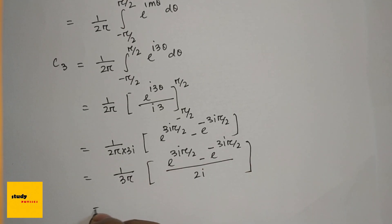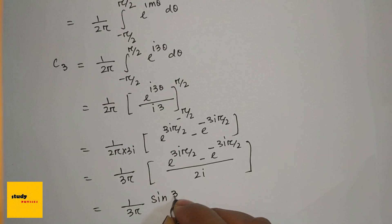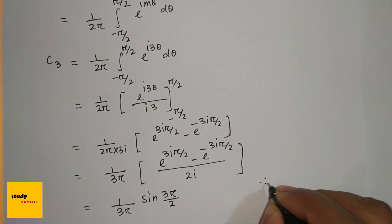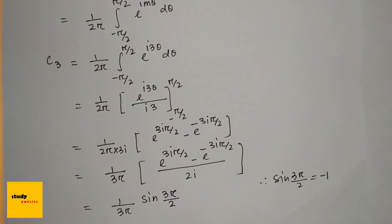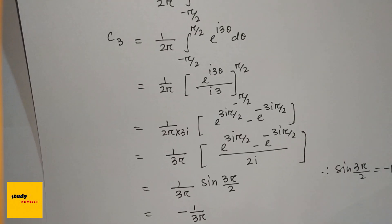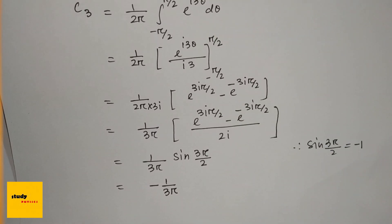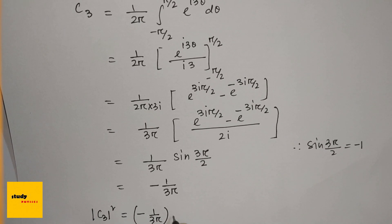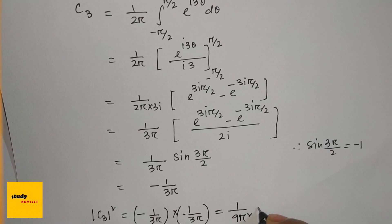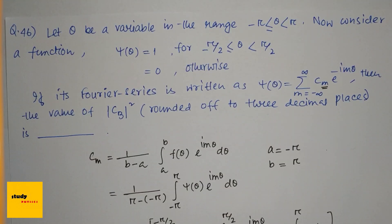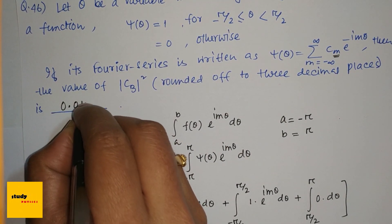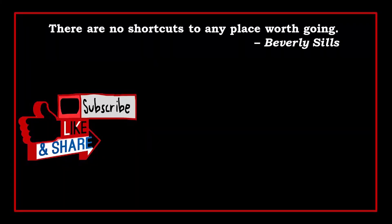Since sin(3π/2) = −1, we get c₃ = −1/(3π). Therefore |c₃|² = (−1/(3π)) · (−1/(3π)) = 1/(9π²), which equals approximately 0.011. So the answer is 0.011. Thank you for watching this video — please like, share, and subscribe.